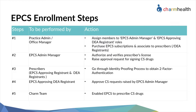Step 3: Prescribers, including the approving DEA Registrant as well as other providers who need EPCS services, have to go through an identity proofing process to obtain two-factor authentication. Step 4: The approving DEA Registrant needs to approve requests raised by the EPCS Admin Manager for themselves and other providers enrolling for EPCS. Step 5: Charm Team will enable EPCS services for prescribers to prescribe CS drugs.